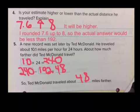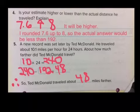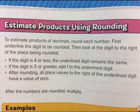This is your therefore statement. As a key answer, let's put three dots as our 'therefore.' Therefore, Ted McDonald traveled about 48 miles farther. Now just to make a note of what we just did: to estimate products of decimals, round each number to a whole number first.